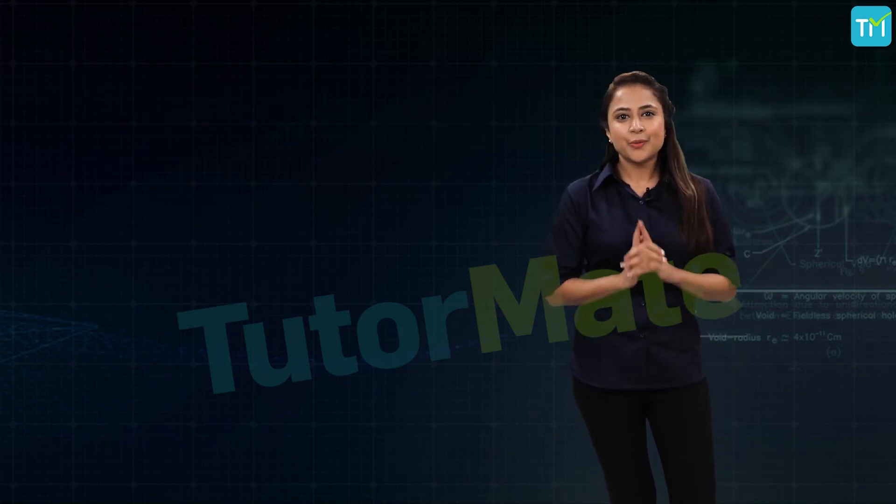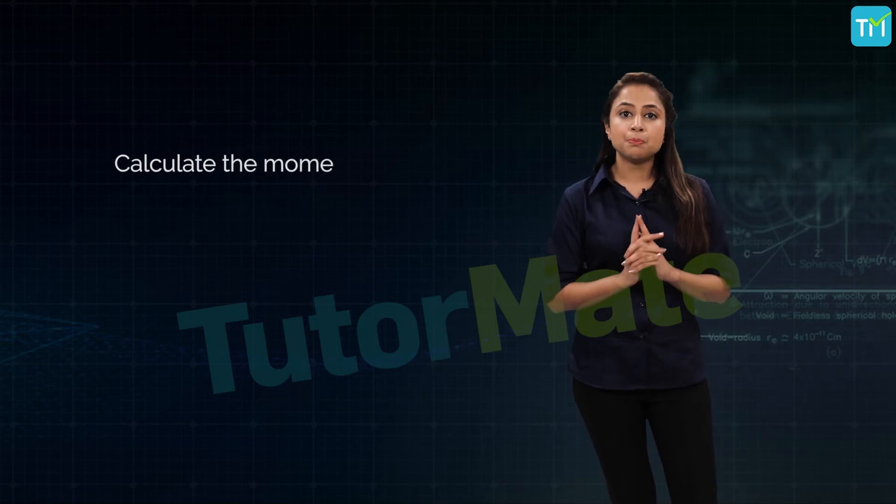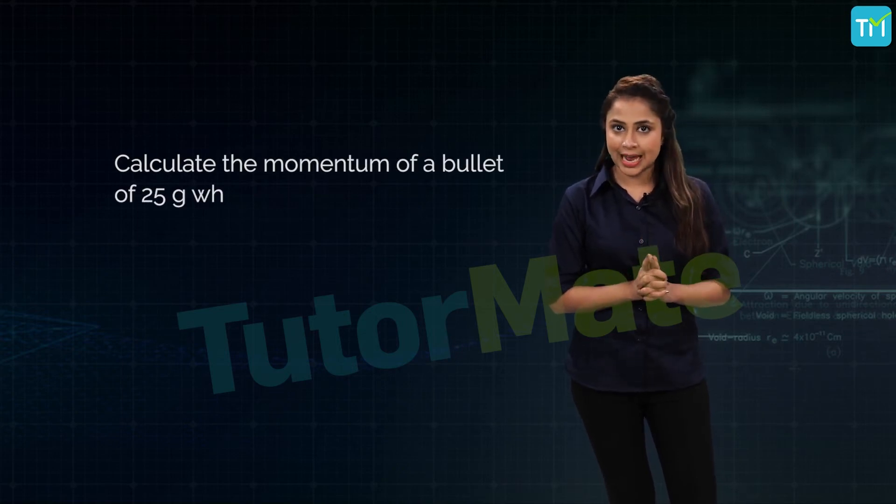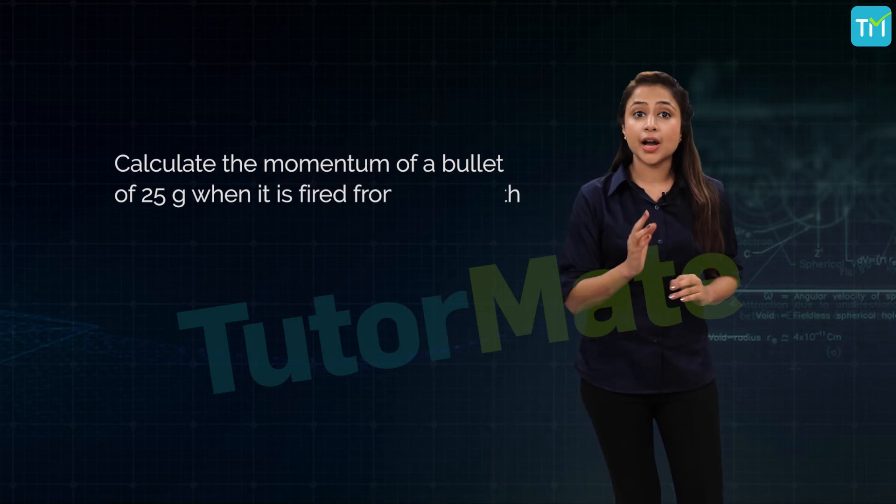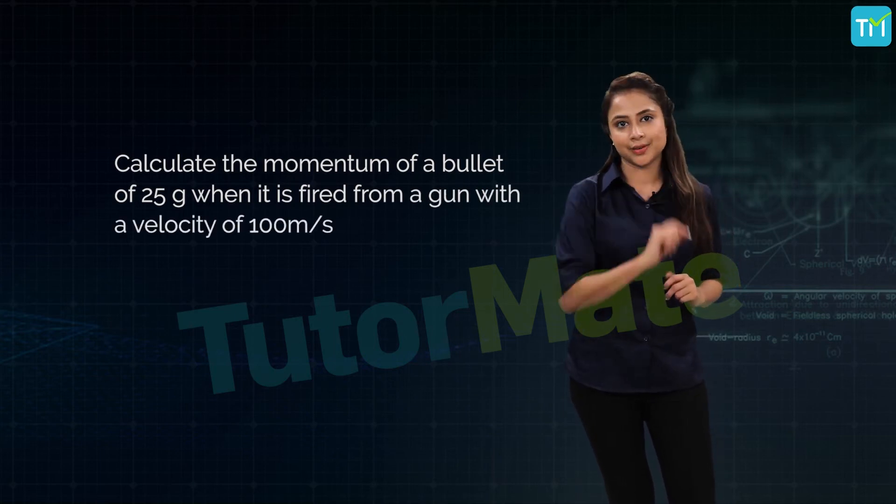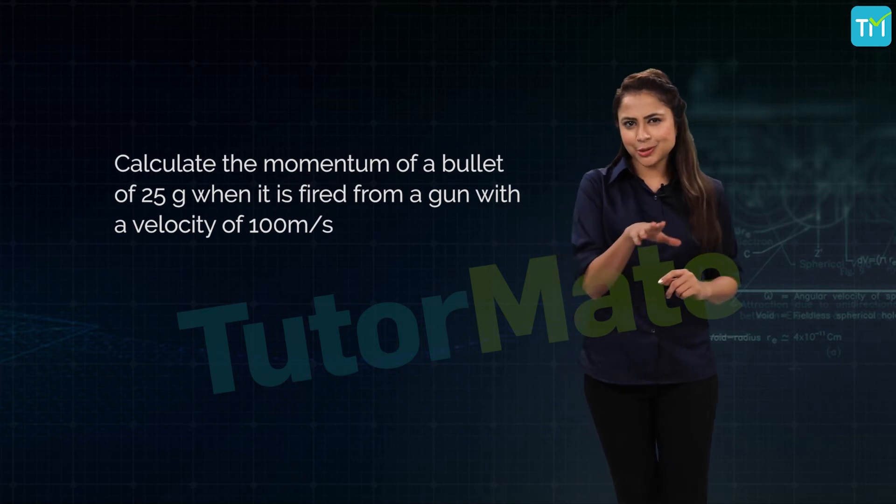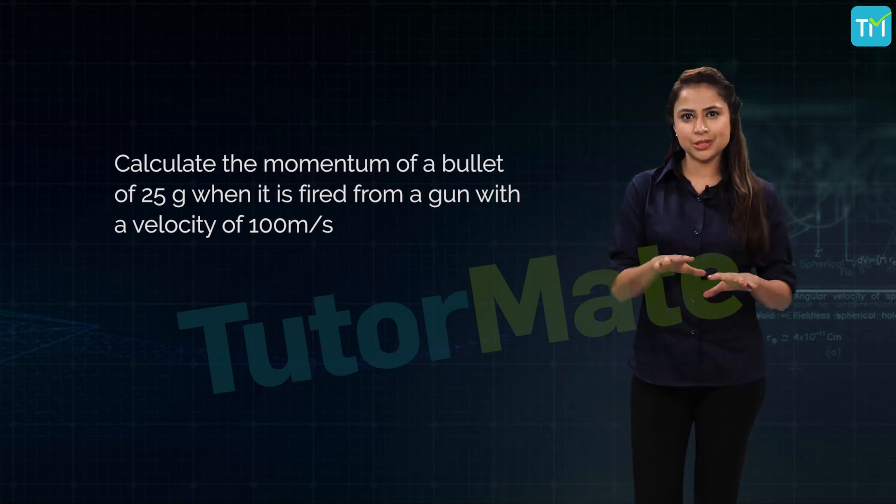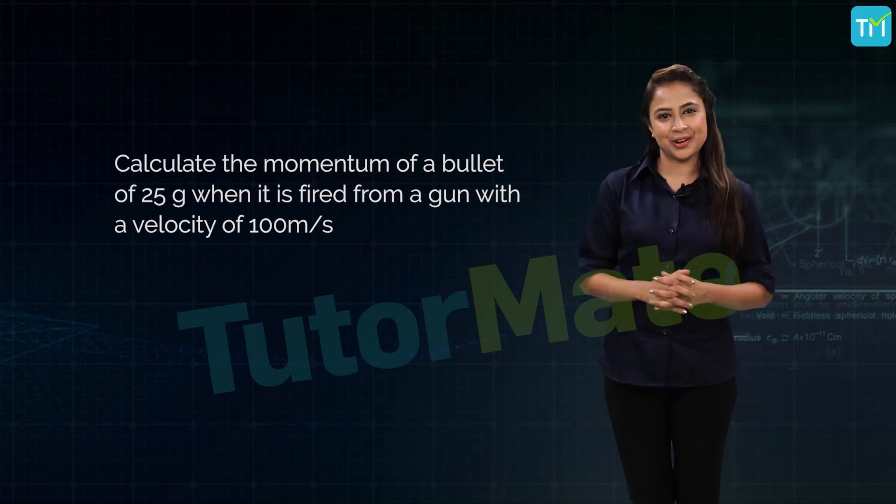Here's another one. We have to calculate the momentum of a bullet of mass 25 grams when it is fired from a gun with a velocity of 100 meters per second. Now, try to do this one yourself. Pause the video and then let it play after you've solved it. I'm gonna be waiting.